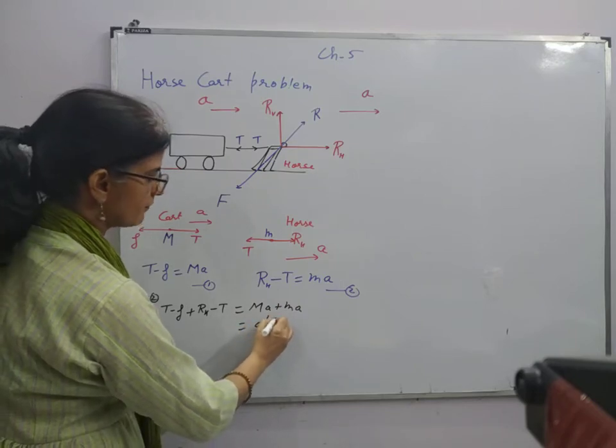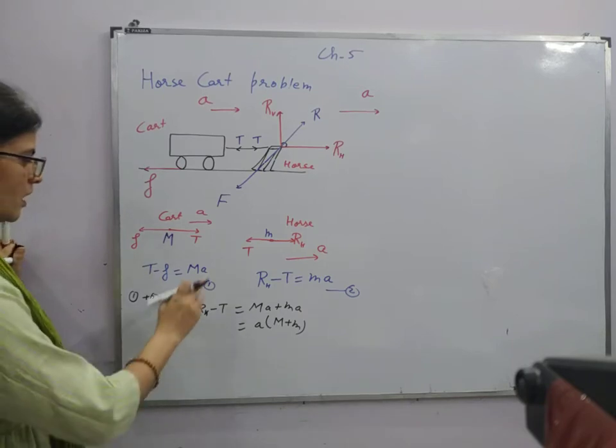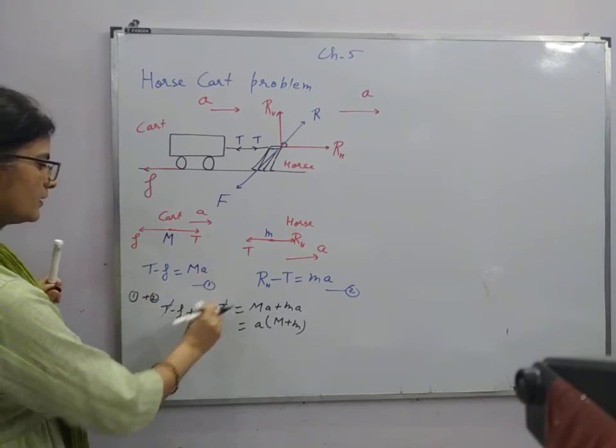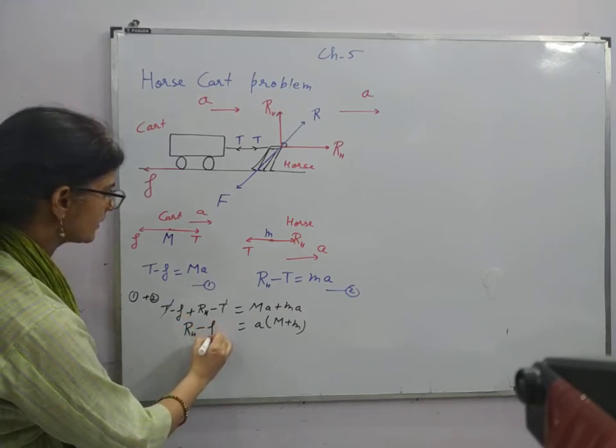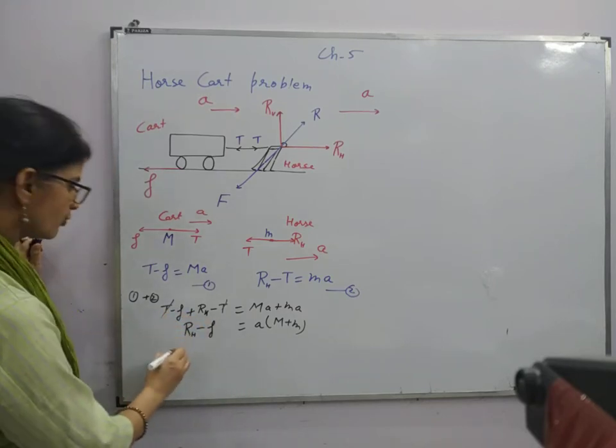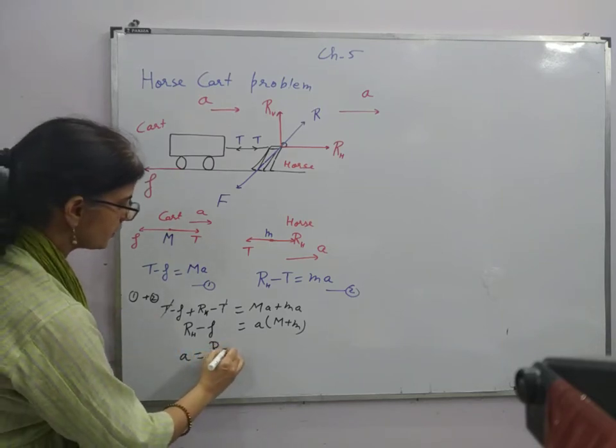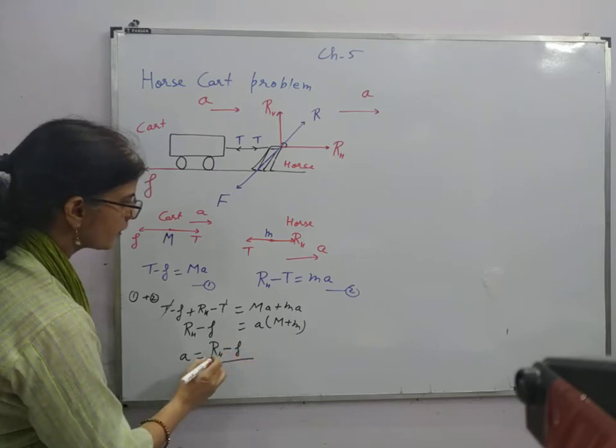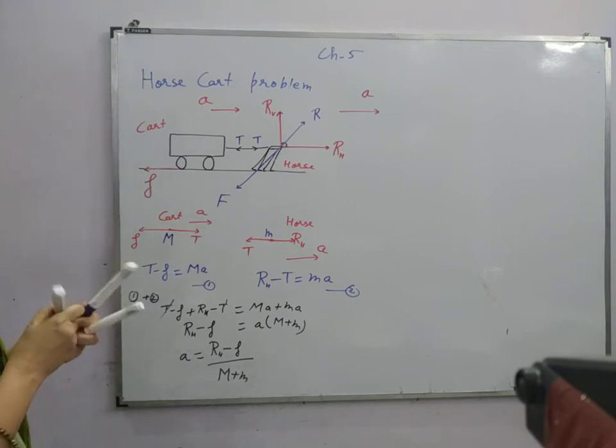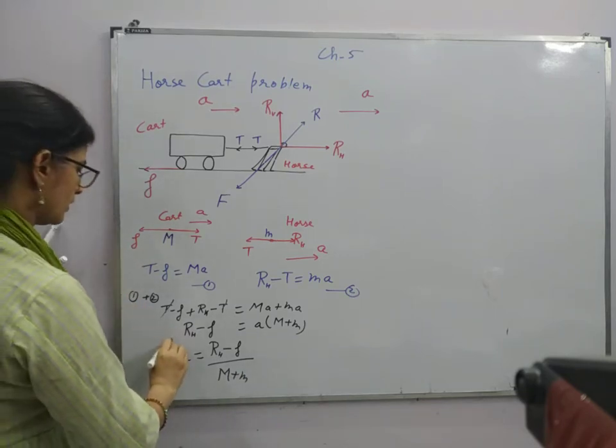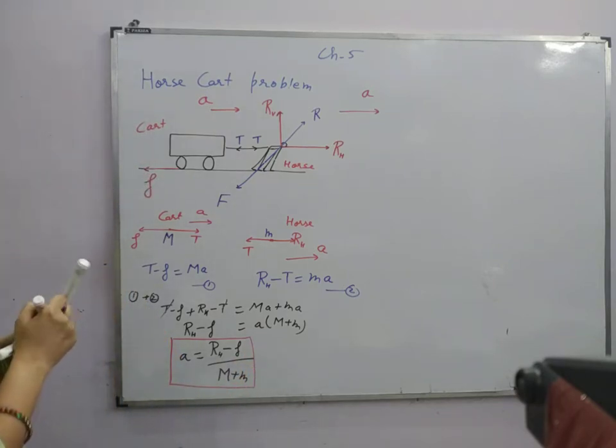This gives me small m plus capital M. And from here this is cancelled. So I can say that this is horizontal component minus the friction force. So from here the acceleration comes out to be horizontal component minus friction force upon the total mass of the system which is moving. This is the acceleration of the system.